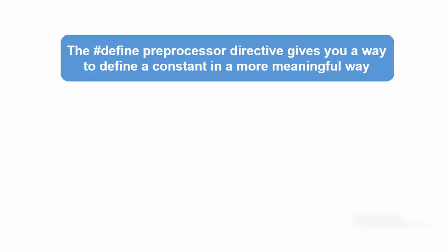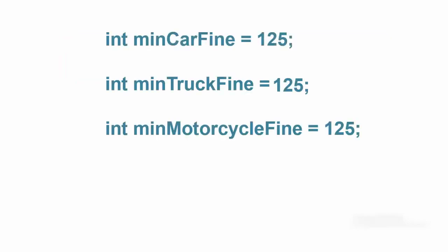Suppose you have the following code fragment in your program. This code shows that minimum fine which can be imposed on a car is 125. For truck it is 125 and for motorcycle it is also 125. Now suppose the fine changes and the minimum truck fine becomes 150. Truck fine must be changed in the whole code.